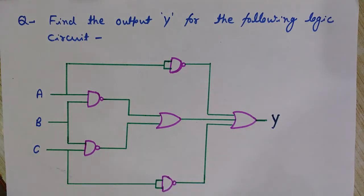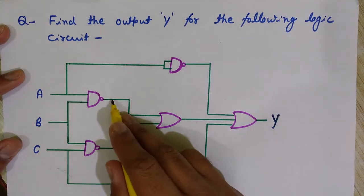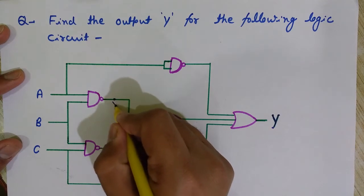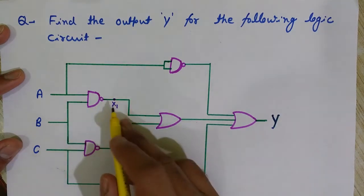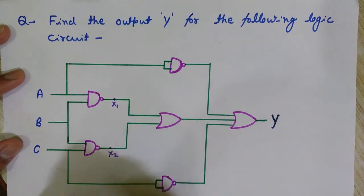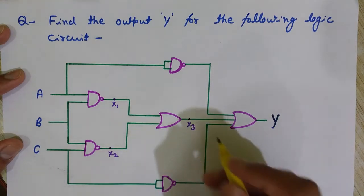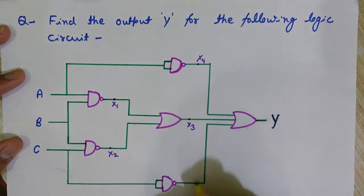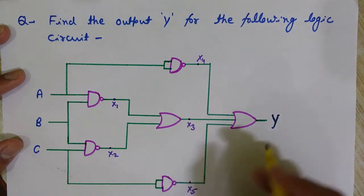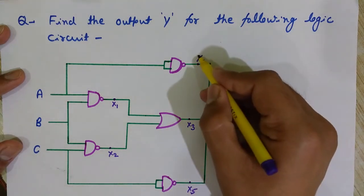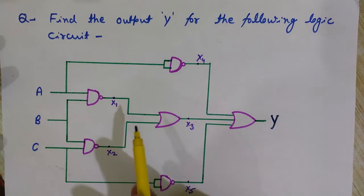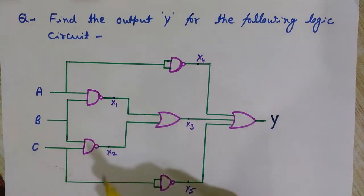For solving this circuit in a more organized way, let me name the intermediate outputs. Let's say this output is x1, this one is x2, this one is x3, this one is x4, this one is x5, and the last output is Y. I'll use these for reference. First, let's find the values of x1, x2, x3, x4, and x5, then we will find Y.